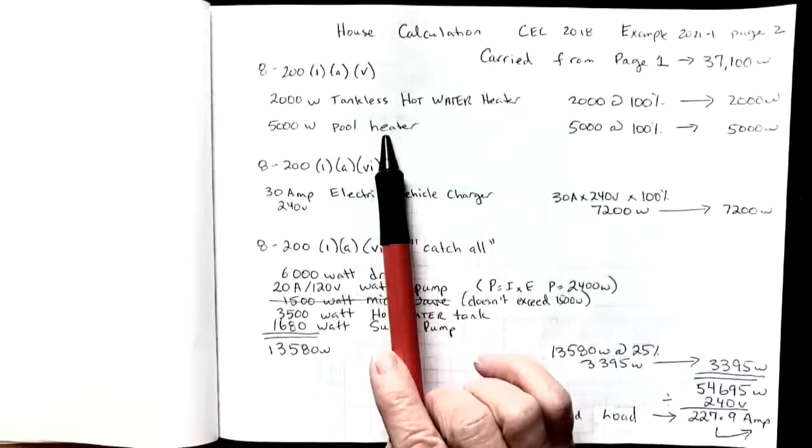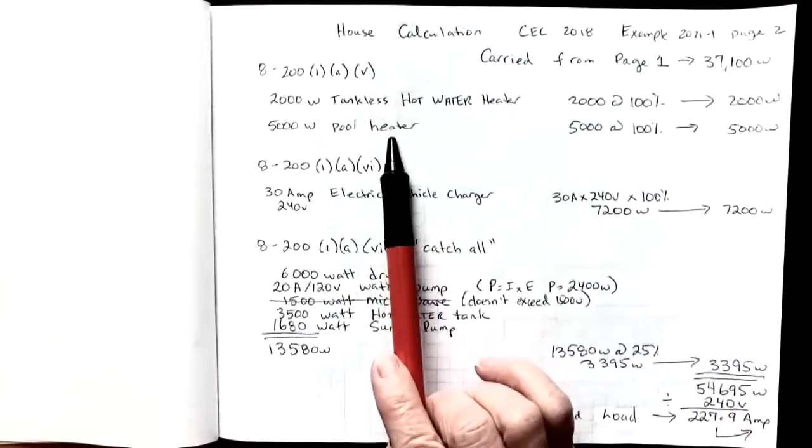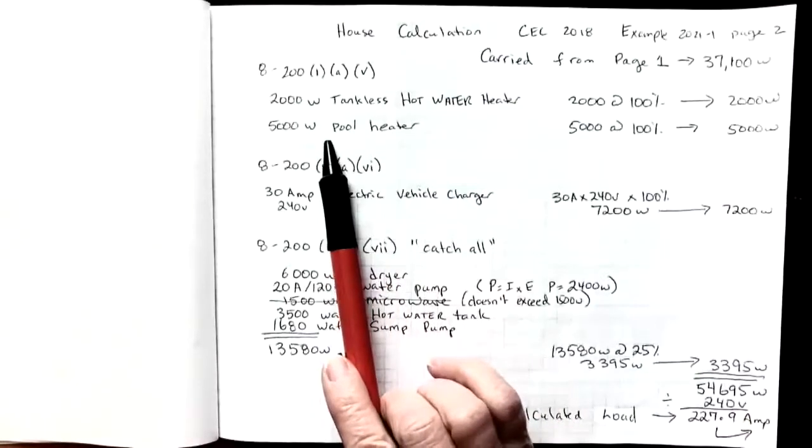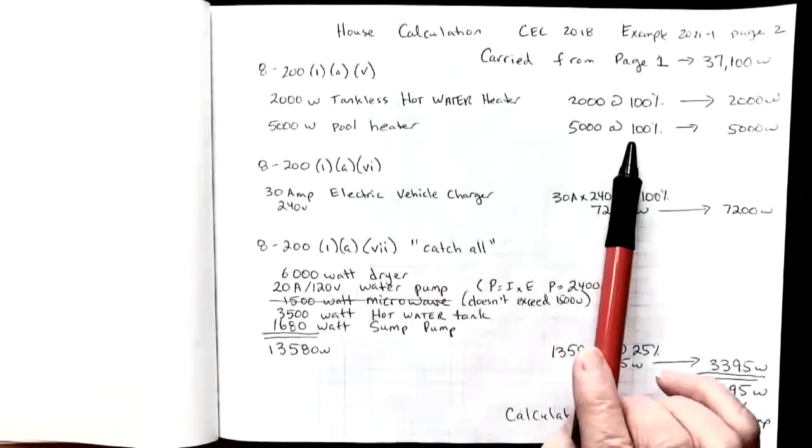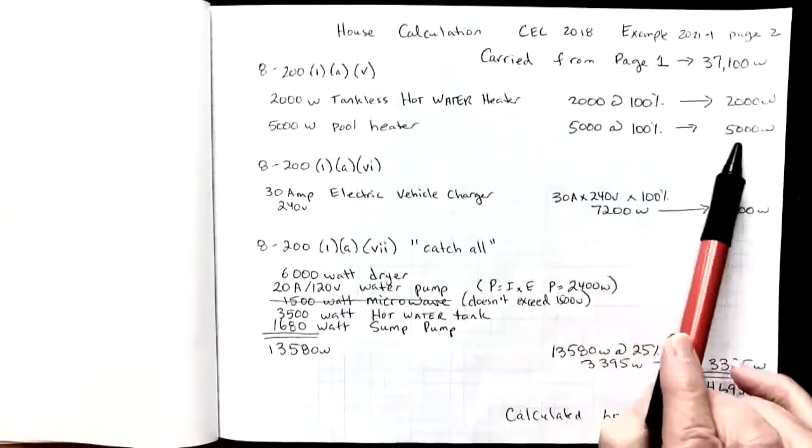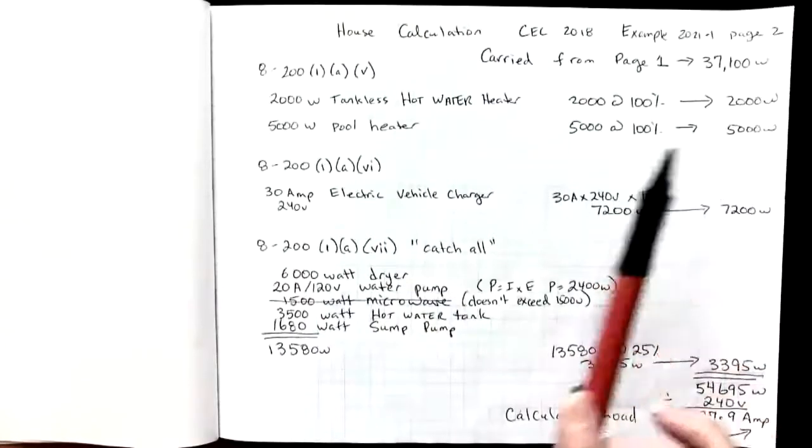This rule also talks about pools and spas and hot tubs. In this example, we had a pool heater, 5,000 watts. That's going to go towards the demand at 100%, so 5,000 watts will be added.